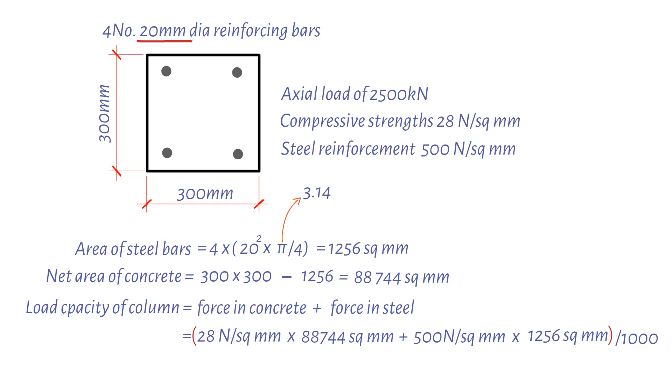Therefore, the load capacity of the column equals 3,112.8 kilonewtons, which is greater than 2,500 kilonewtons. Hence, the column cross-section would be suitable to resist the design load of 2,500 kilonewtons.